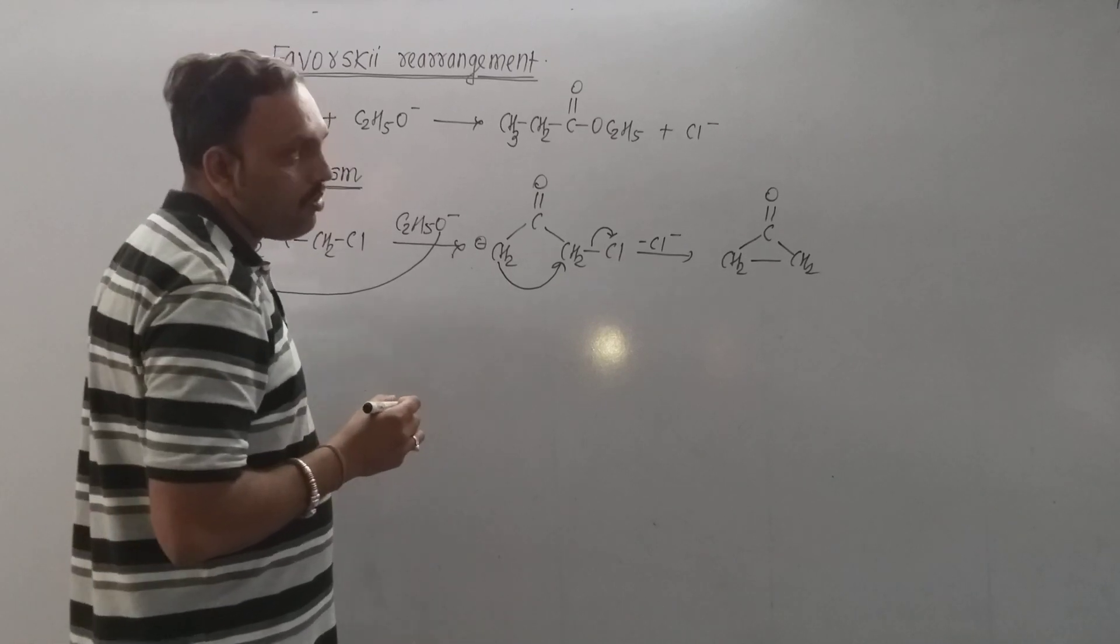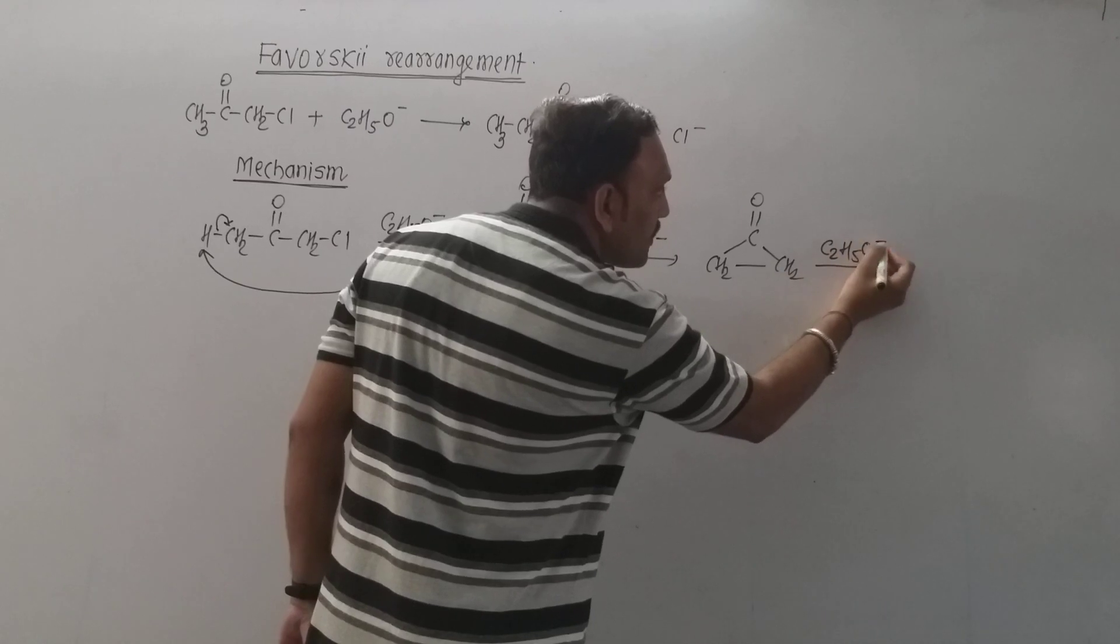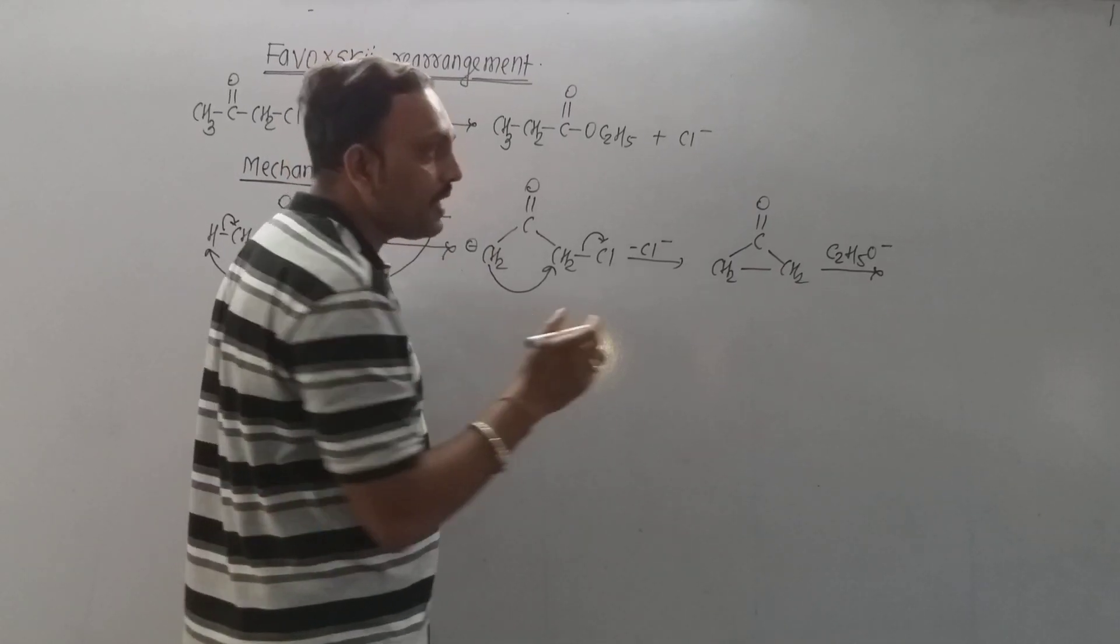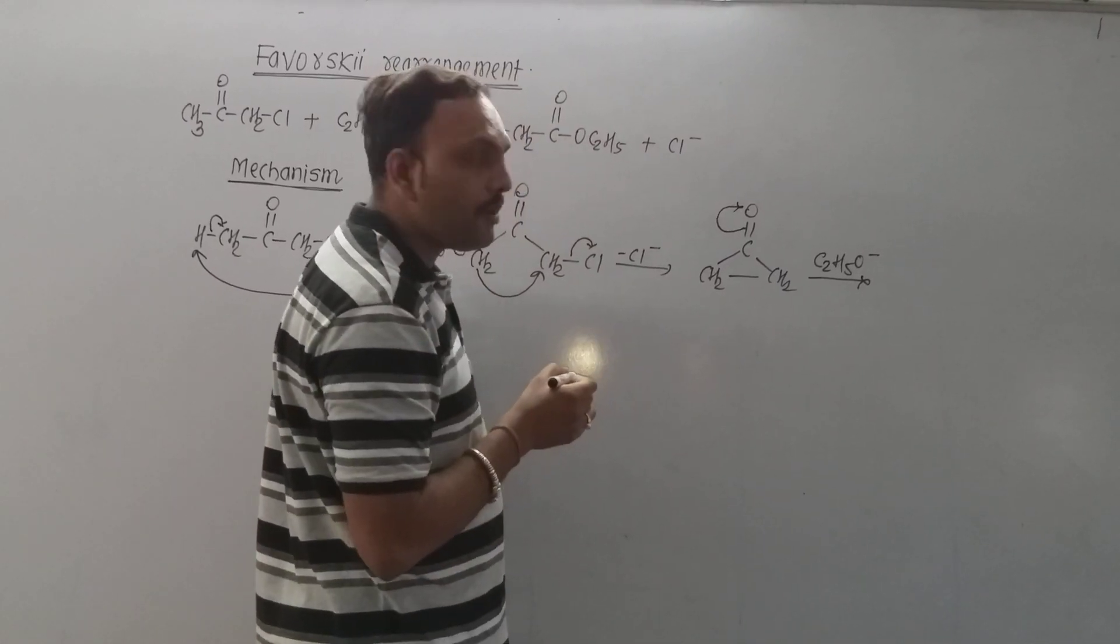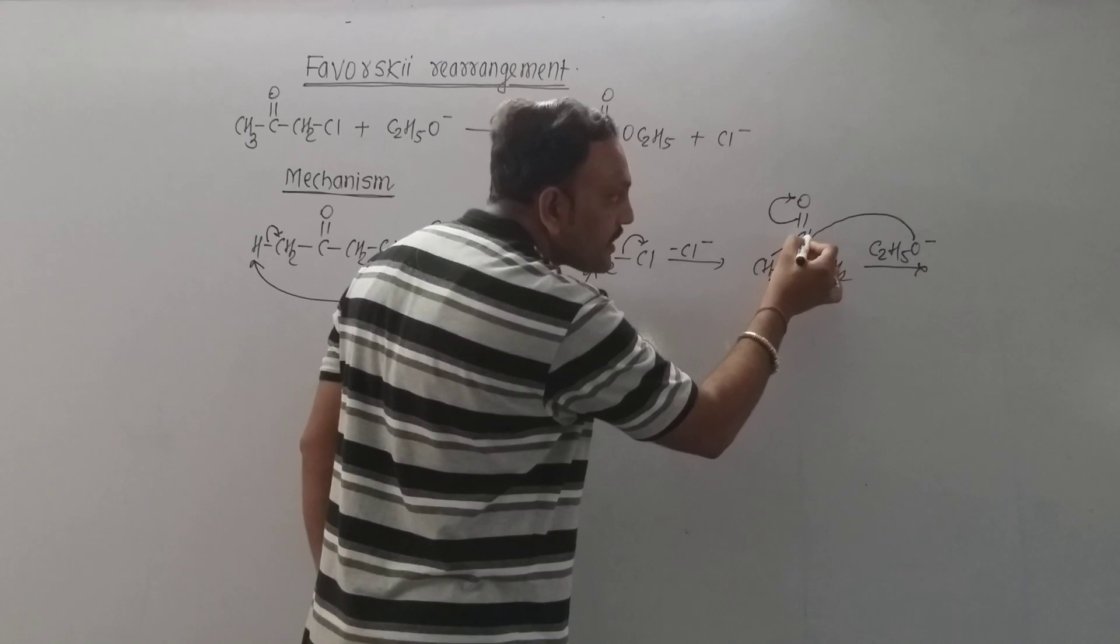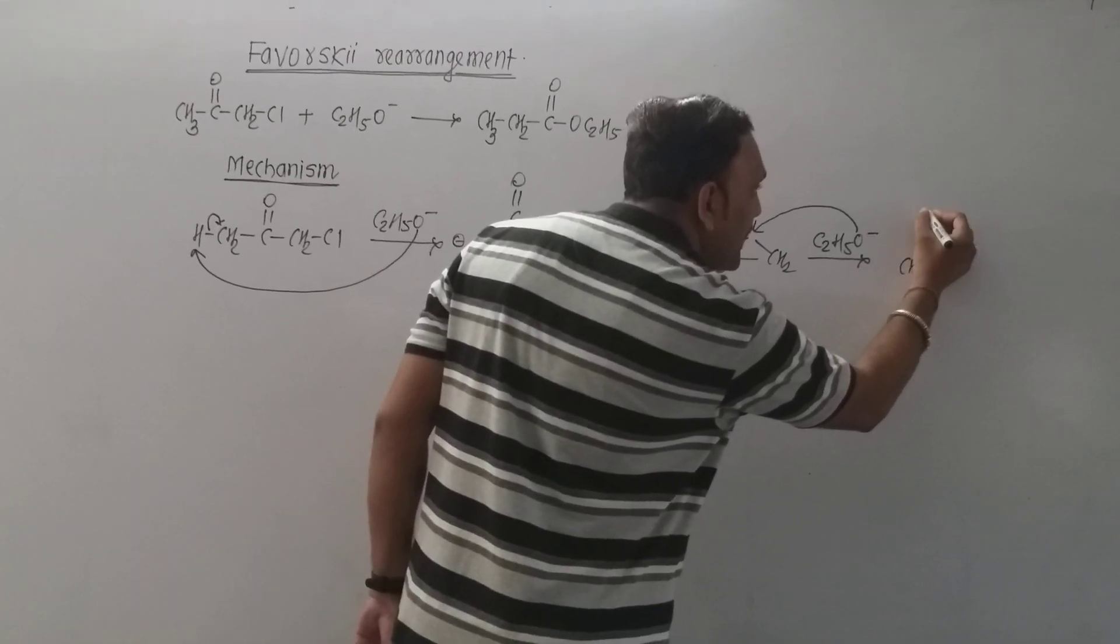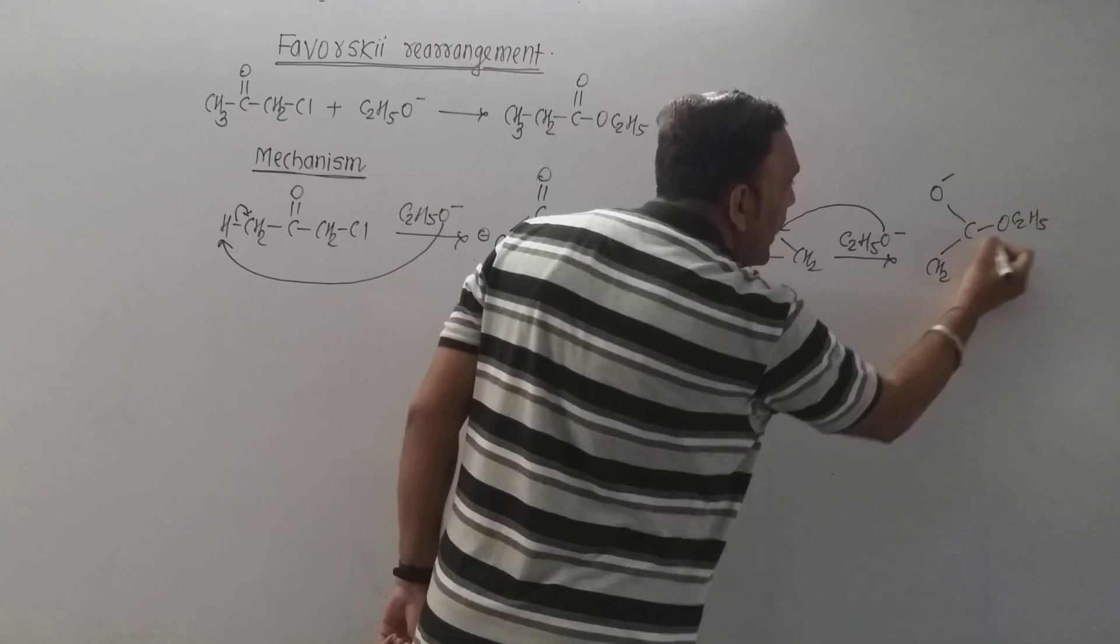Ethoxide ion attacks on the carbonyl carbon. We all know very well that carbonyl group in aldehydes and ketones is polar in nature. Oxygen being electronegative attracts electron pair, due to which nucleophile attacks at this center quite easily. An intermediate species so obtained can be mentioned as shown.